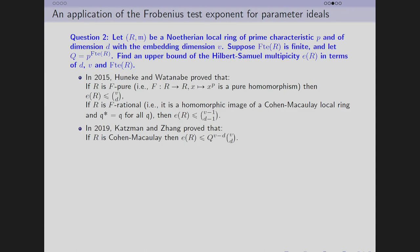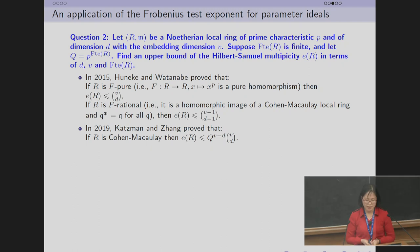The second question we consider: Let R be a Noetherian local ring of prime characteristic p and dimension d with embedding dimension v. Suppose the Frobenius test exponent for parameter ideals is finite. We want to find an upper bound of Hilbert-Samuel multiplicity of the ring in terms of d, v, and Frobenius test exponent for parameter ideals.